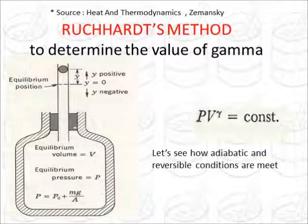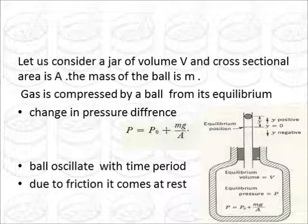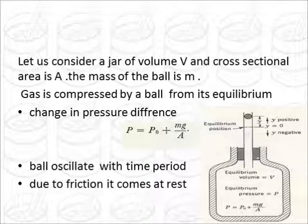Now let us apply this to a practical example, that is Richard's method to determine the value of gamma. Now Richard's method uses the equation PV^γ equals constant, that is the common adiabatic equation. Now let's see how adiabatic and reversible conditions are met in this experiment. First let's give you a brief overview of the experiment. The thing is that there is a constant volume jar with a piston kind of thing in it, with a ball in it. When you press the ball, it oscillates.